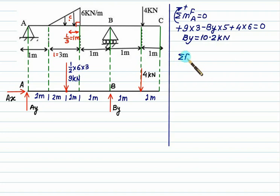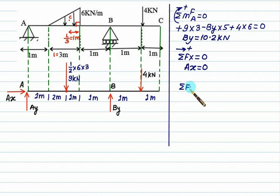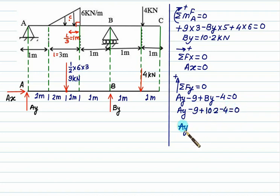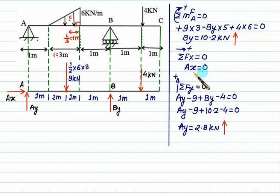Next, find Ax using summation of Fx equal to zero with rightward positive. We have only one entry, so Ax equal to zero. Then for sigma Fy equal to zero with vertically upward positive: Ay is positive, 9 kilonewton is negative, By is positive at 10.2, and 4 kilonewton is negative. Substituting: Ay minus 9 plus 10.2 minus 4 equal to 0, giving Ay equal to 2.8 kilonewton. Both By and Ay are positive, so assumed directions are correct — vertically upward. Since Ax equals zero, Ay is the same as the reaction Ra.